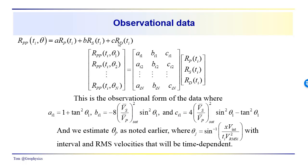B sub i one would be equal to minus eight times the average shear wave over the average p wave compressional wave velocity squared for a saturated medium times the sine squared of theta one. And then the last constant c in this expression for angle theta one is before times this ratio of the average shear to compressional wave velocity squared for a saturated medium times the sine squared of theta one minus the tangent squared of theta one.